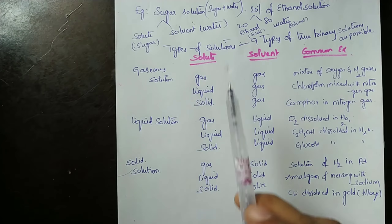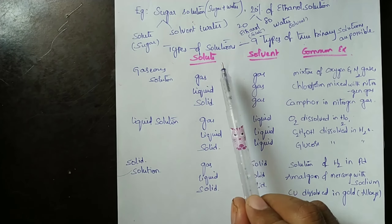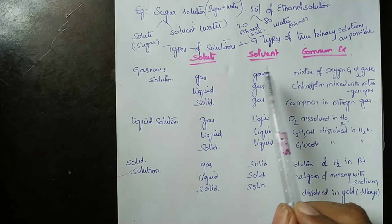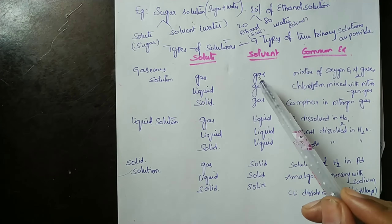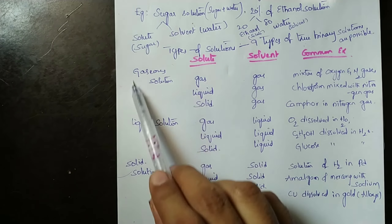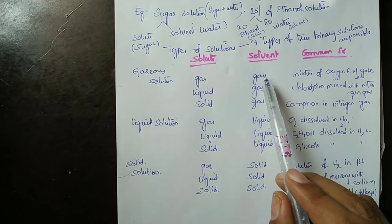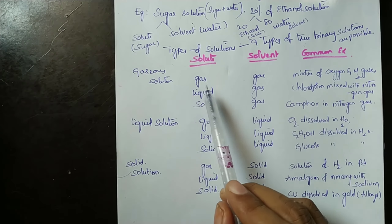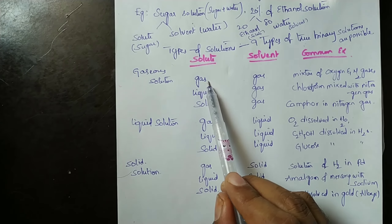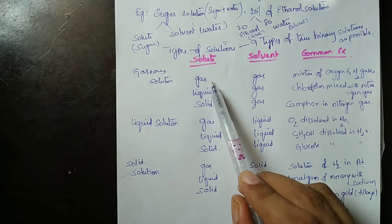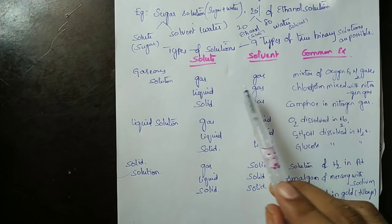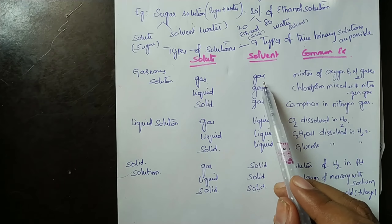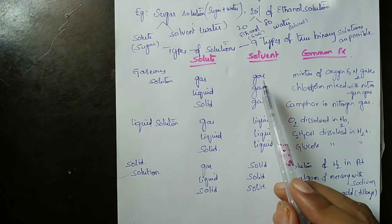There are nine types of binary solutions. In a gaseous solution, both solvent and solute are gases. An example is a mixture of oxygen gas and nitrogen gas.